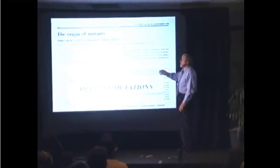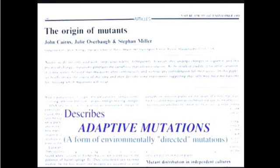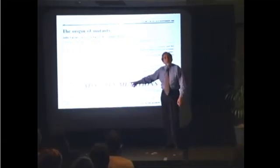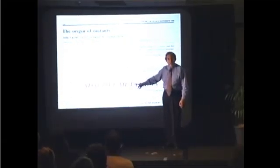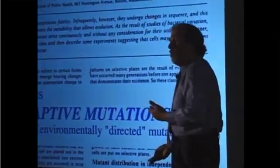In 1988, a paper came out in Nature by John Cairns that changed the entire foundation of biology. He described a new kind of mutation called an adaptive mutation. The point: genes are not changing randomly — the environment is controlling the mutation, so you're always adjusting your genes to fit what you perceive in the environment. It's not random; it's environmentally directed mutations.